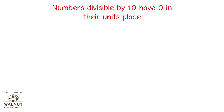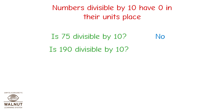Numbers divisible by 10 have 0 in their units place. Use the divisibility test for 10 and say whether these numbers are divisible by 10. Is 75 divisible by 10? What is the number in the units place? It is 5. So 75 is not divisible by 10. Is 190 divisible by 10? What is the number in the units place? It is 0. This number is divisible by 10.